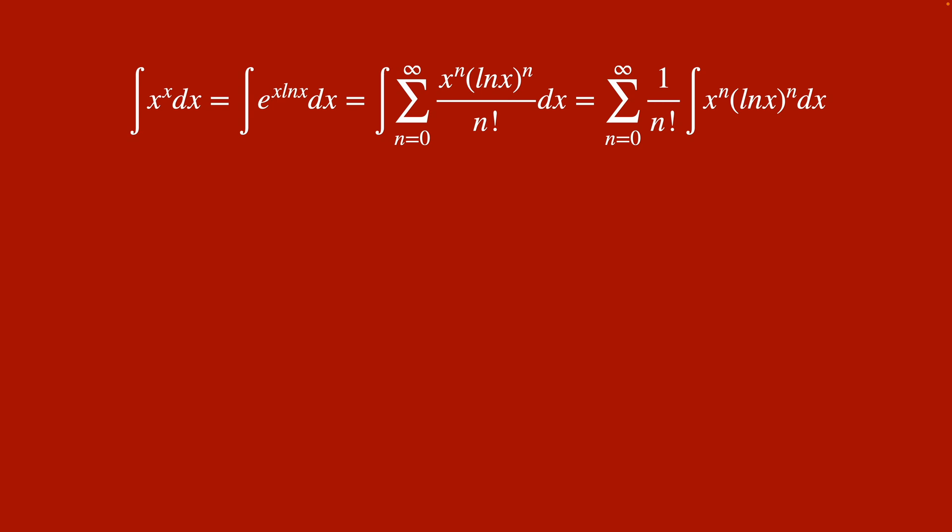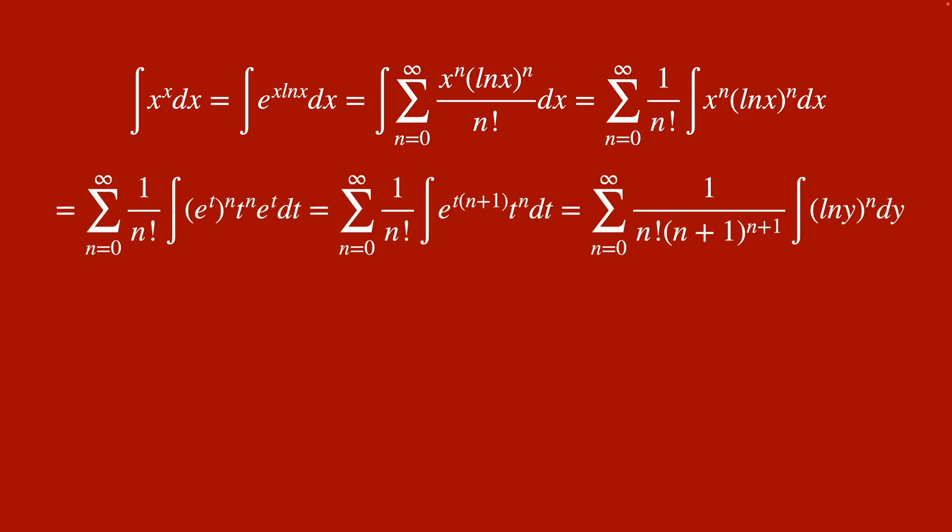Now we're going to do three substitutions. So the first thing we're going to do is let t be ln x. So I can plug that guy in and notice that that implies x is e to the t. And so dx is e to the t dt. So we can simplify that guy.